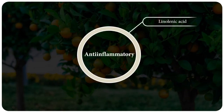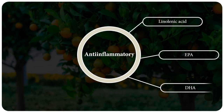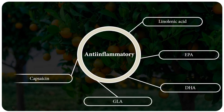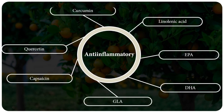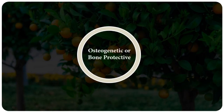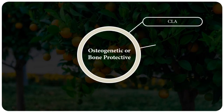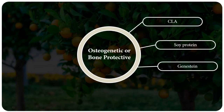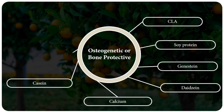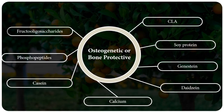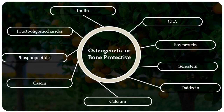Fourth is anti-inflammatory nutraceuticals. They include linolenic acid, EPA, DHA, gamma-linolenic acid, capsaicin, quercetin and curcumin. Next is osteogenic or bone-protective nutraceuticals, which include conjugated linoleic acid, soy proteins, genistein, daidzein, calcium, casein, fructooligosaccharides and inulin.